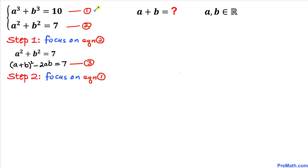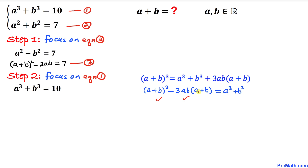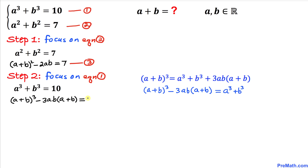Let's focus on equation 1 now. Recalling the cubic identity for (a+b)³ and moving 3ab(a+b) to the left hand side, we get a³ + b³ = (a+b)³ − 3ab(a+b). Replacing a³ + b³ gives us (a+b)³ − 3ab(a+b) = 10. Let's call this equation number 4.